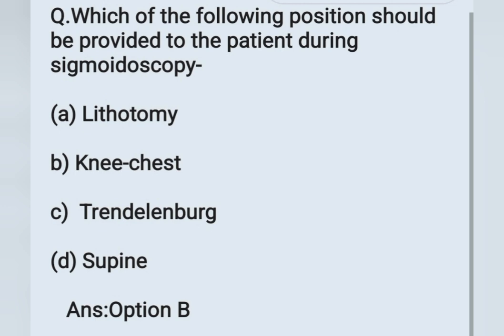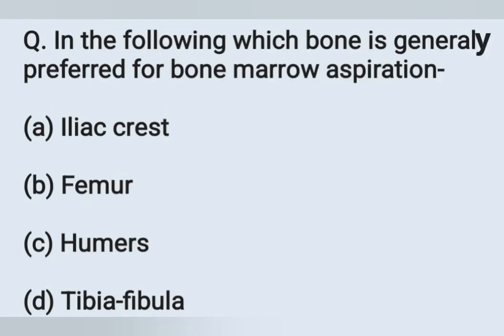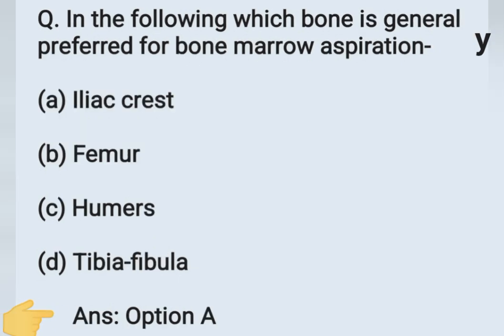The next question: which bone is generally preferred for bone marrow aspiration? Options: A - iliac crest, B - femur, C - humerus, D - tibia/fibula. The bone which is preferred for bone marrow aspiration is the iliac crest. Option A is the correct answer.